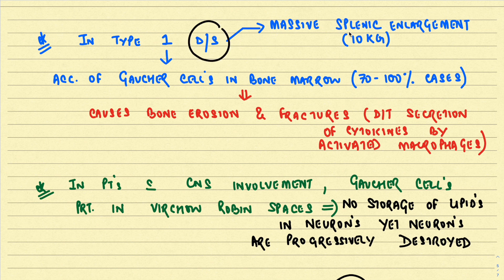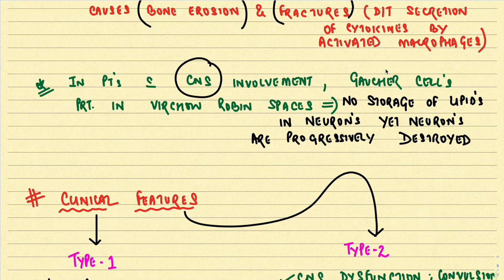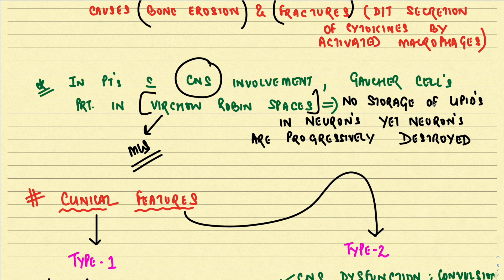In Type 1 disease there is massive splenic enlargement — sometimes up to 10 kg — since the CNS is not involved. Gaucher cell accumulation in bone marrow is seen in 70–100% of cases, causing bone erosion and fractures due to cytokine-mediated bone resorption. In Type 2, Gaucher cells are found in Virchow-Robin spaces. Although there is no lipid storage within neurons, progressive neuronal destruction occurs, possibly mediated by cytokines from activated macrophages.